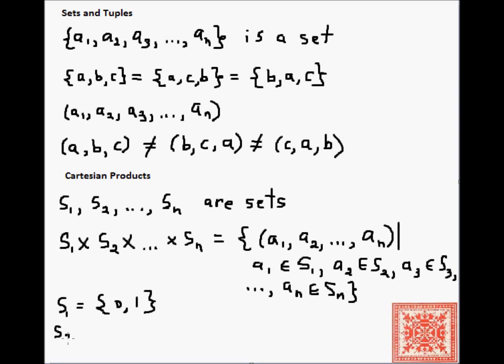Here's a simple example. Let's say that we have two sets, s1 and s2. They're finite. Their Cartesian product will have two tuples—tuples of two elements. The first tuple is 0, a, and the second tuple is 1, a.